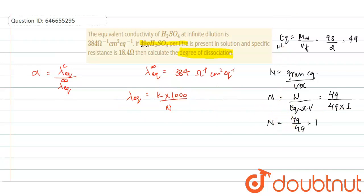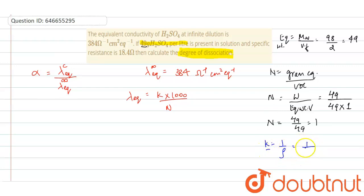Specific conductivity equals 1 divided by rho, where rho is the specific resistance. The specific resistance given is 18.4 ohm, so specific conductivity = 1/18.4 ohm⁻¹ cm⁻¹.